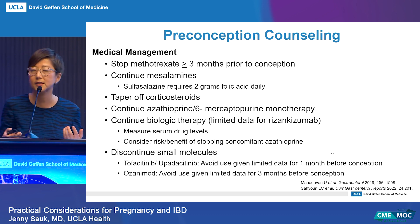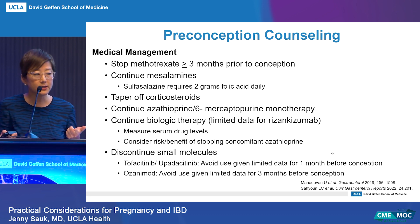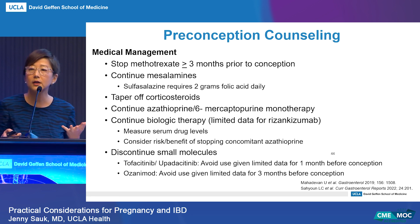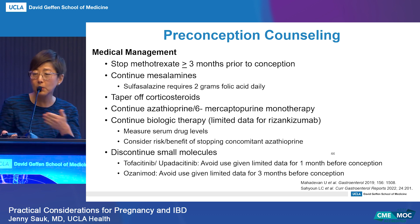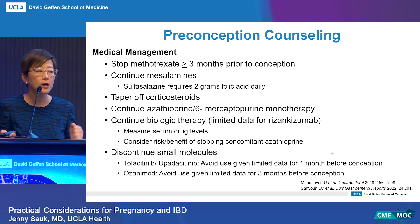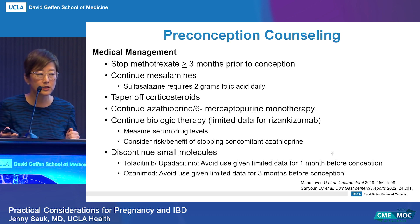For medical management considerations pre-conception: if a patient is on methotrexate, make sure they're off it for at least three months prior to conception. They can continue mesalamines, azathioprine or 6-MP, and biologic therapies. I usually like to check a drug level, because patients can actually develop antibodies during pregnancy — you want them as optimized as possible. You also want to taper off corticosteroids if they're on them and ensure they're on a good, stable steroid-sparing regimen for at least three months prior to conception.